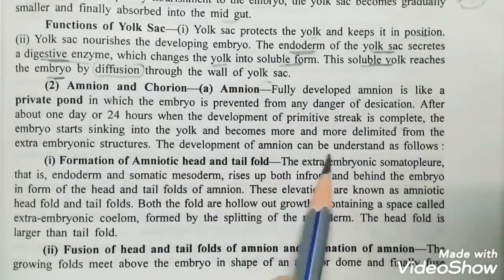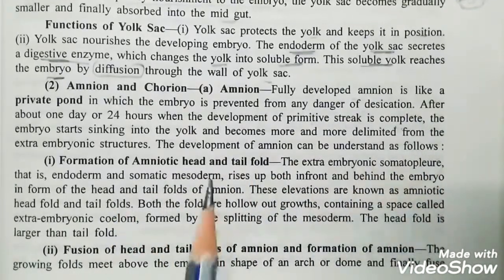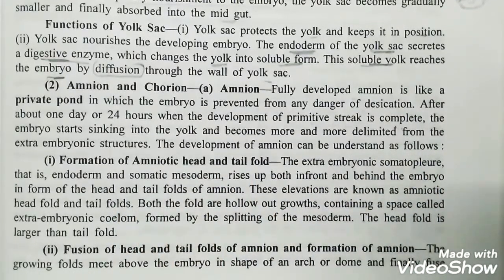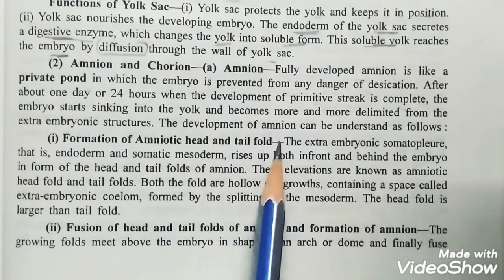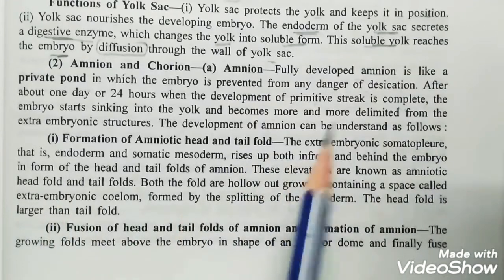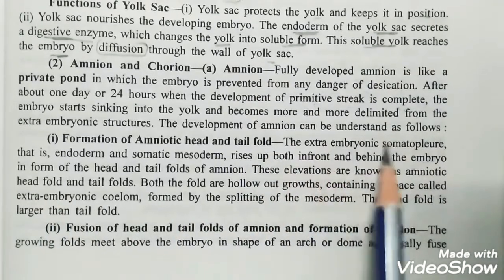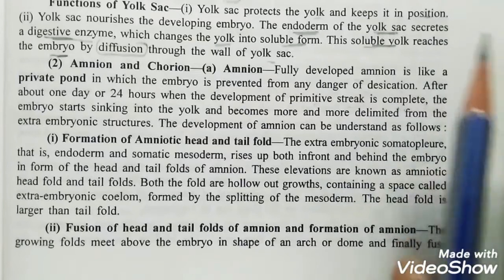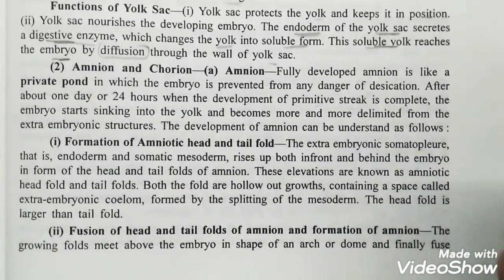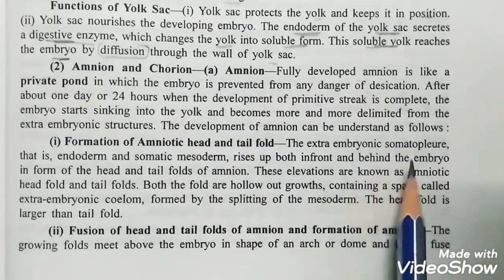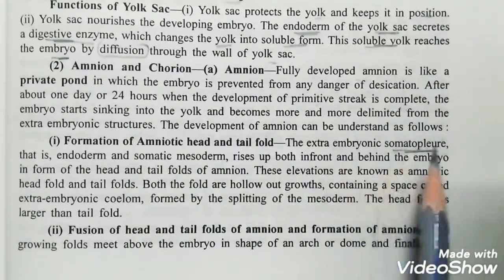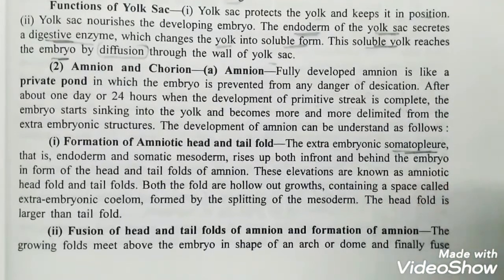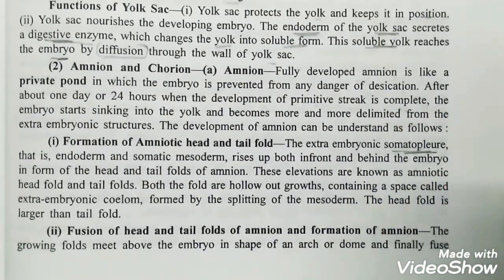The development of amnion can be understood as follows. The first step is the formation of the amniotic head and tail folds. These are called extra-embryonic somatopleur. As we studied splanchnopleur on the yolk sac, the yolk sac is formed by extra-embryonic splanchnopleur.